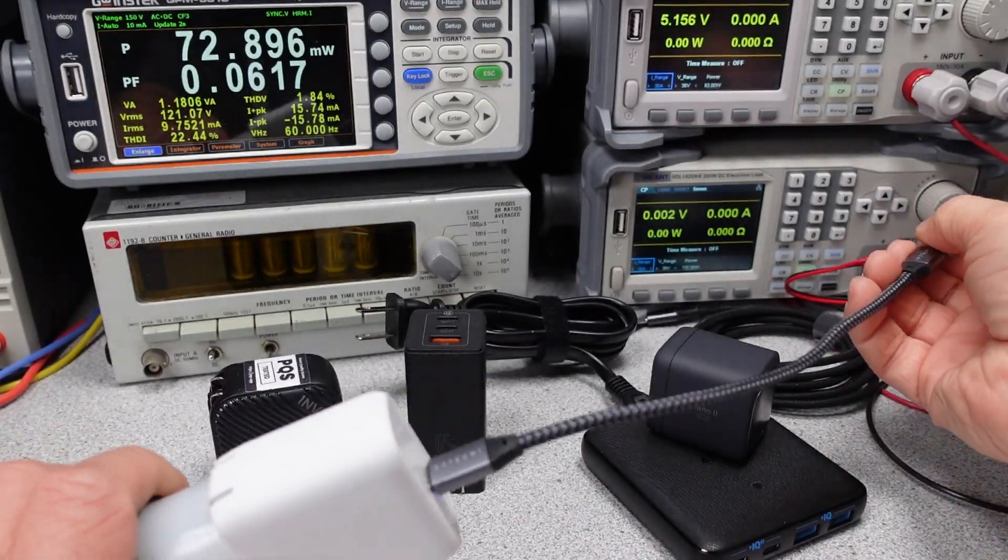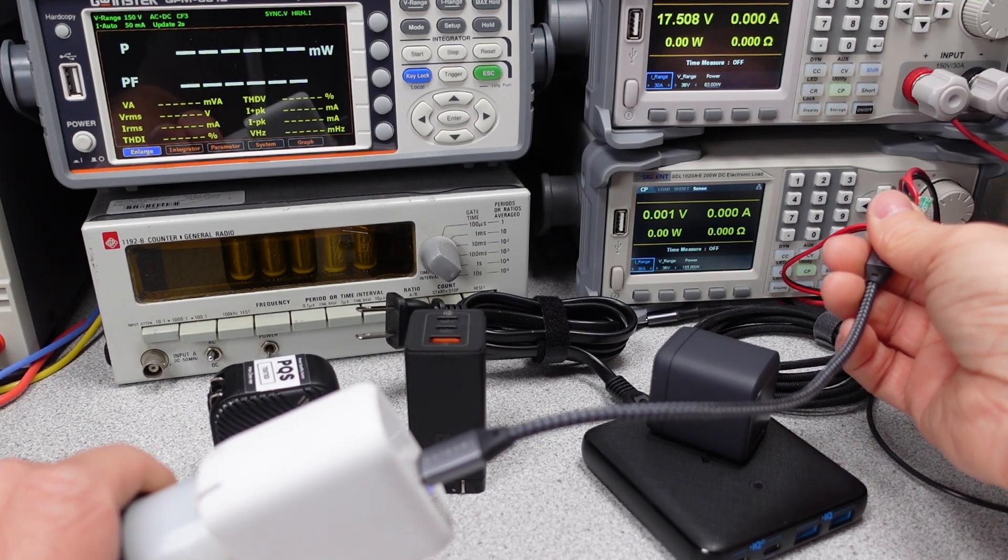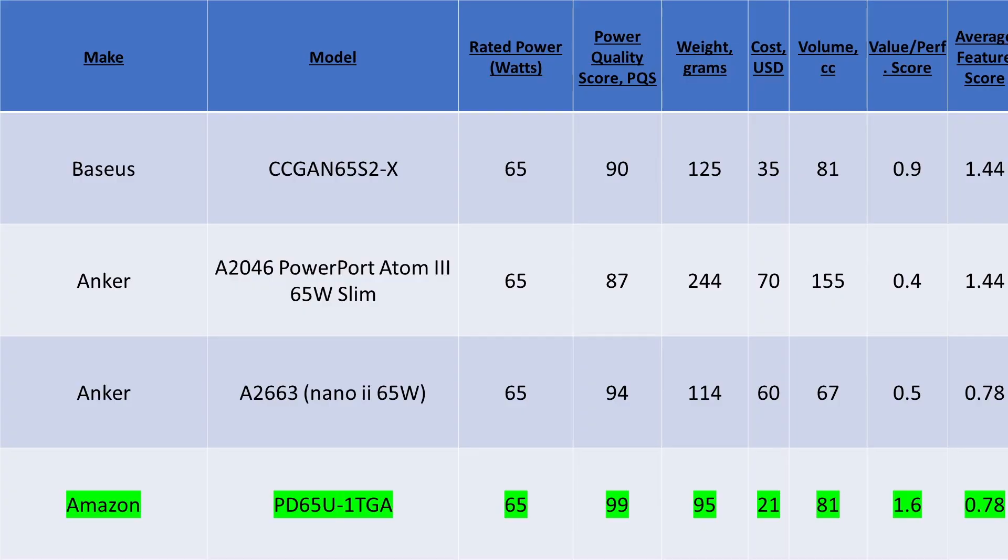The best power adapter in this category, if you can find it in stock, is the Amazon Basics 65W single power adapter. It is inexpensive, small, and represents a decent amount of USB charging requirements. This device does lack PPS, though.